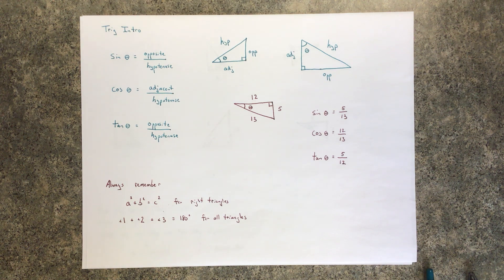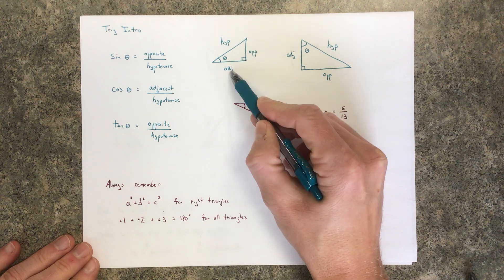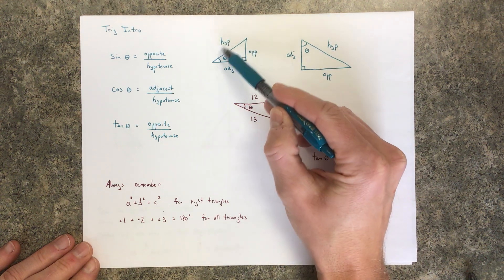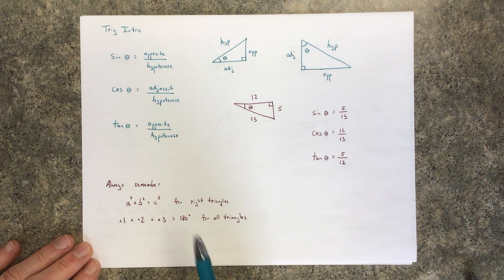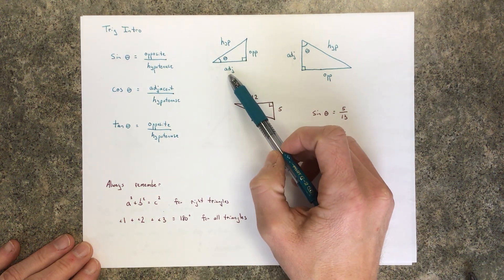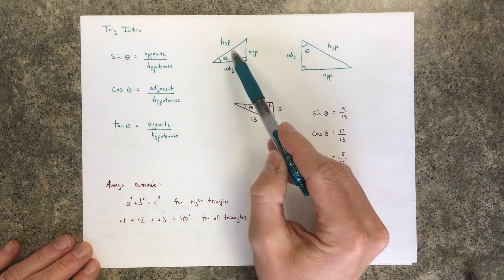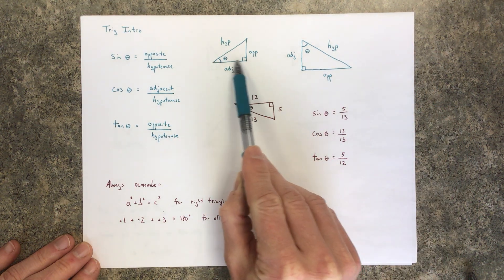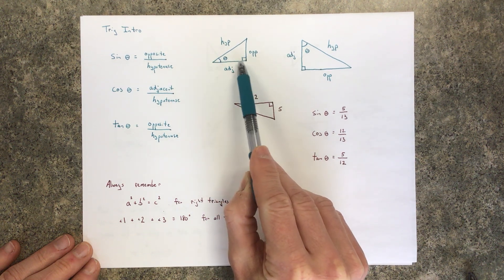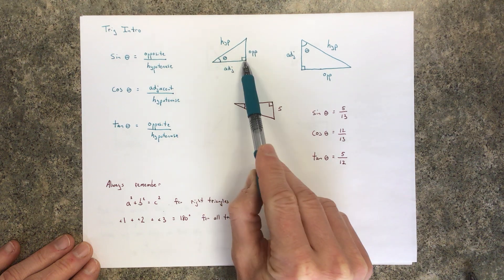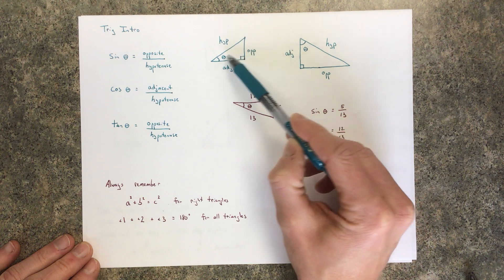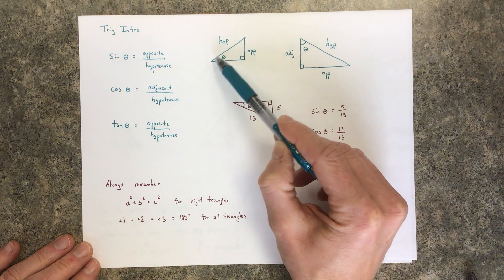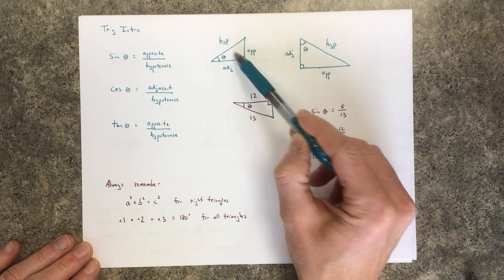Let's talk about what is the hypotenuse, what's the opposite, and how do you know that. The adjacent and the opposite are always the legs of the right triangle, and the hypotenuse is always the longest side — it's also the one across from the right angle. Adjacent means 'next to,' so the adjacent side is next to the angle, and opposite means 'across,' so the opposite side is across from the given angle.